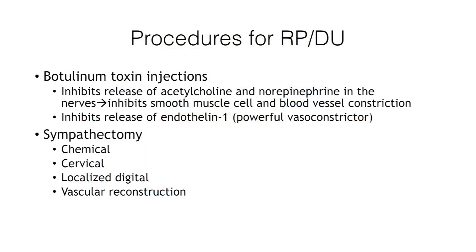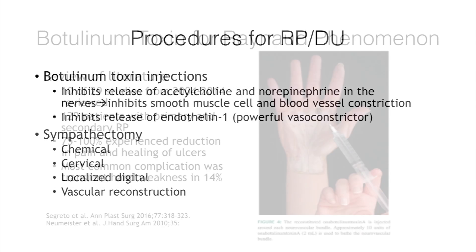In addition to medical therapies for digital ulcers, there are some procedures that can provide benefit. Botox injections have gotten a lot of attention over the past several years. It's thought that Botox inhibits the release of acetylcholine and norepinephrine from the sympathetic nerves, inhibiting smooth muscle cell contraction and vasoconstriction. Sympathectomy is either a chemical procedure or an actual surgery to help improve blood flow.